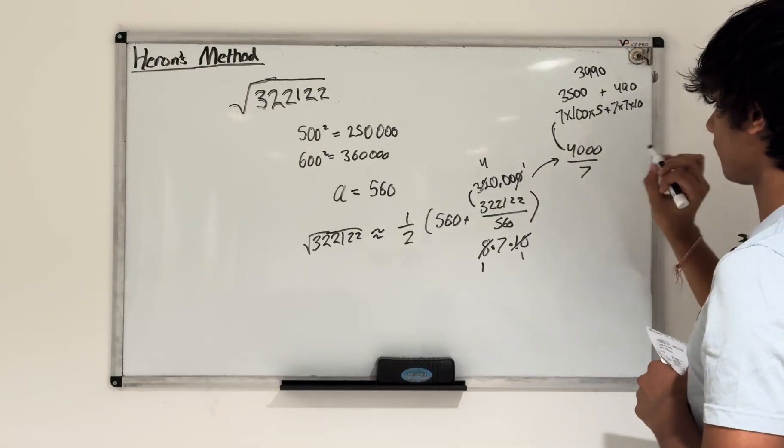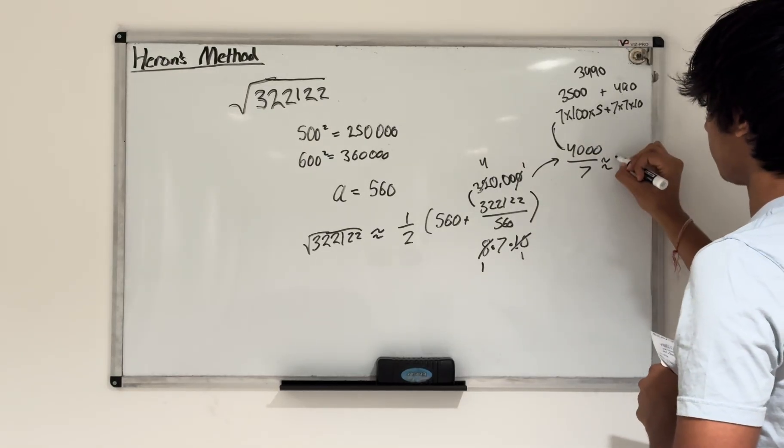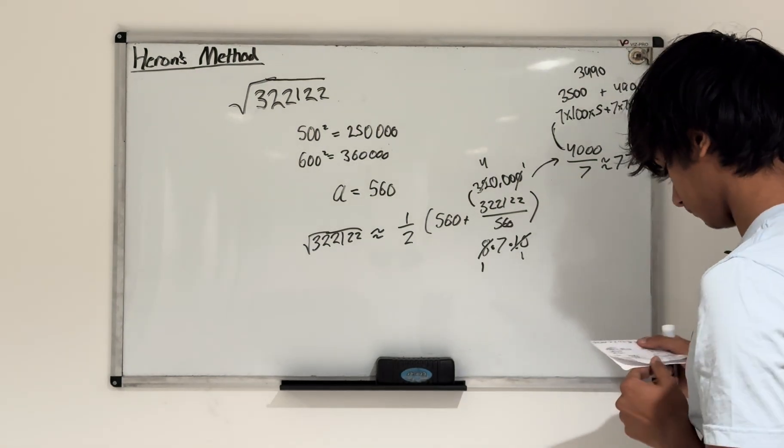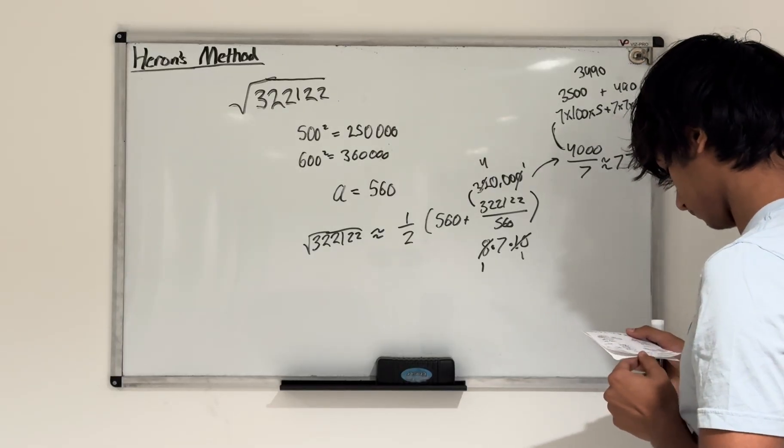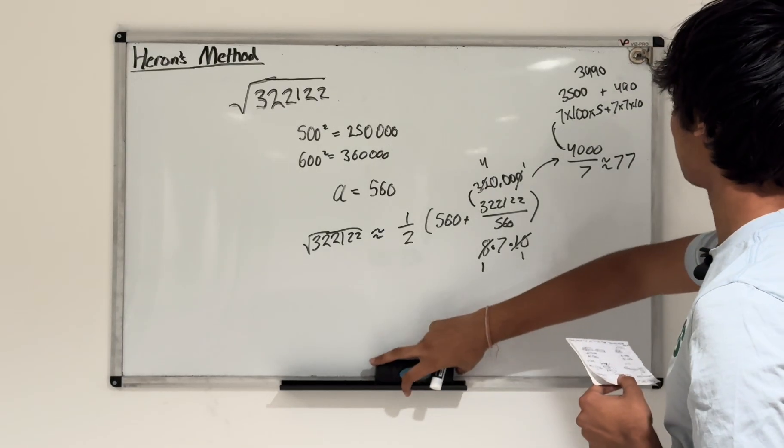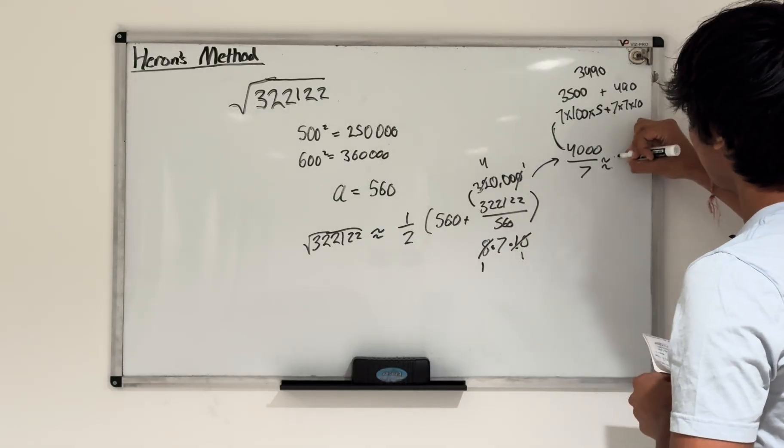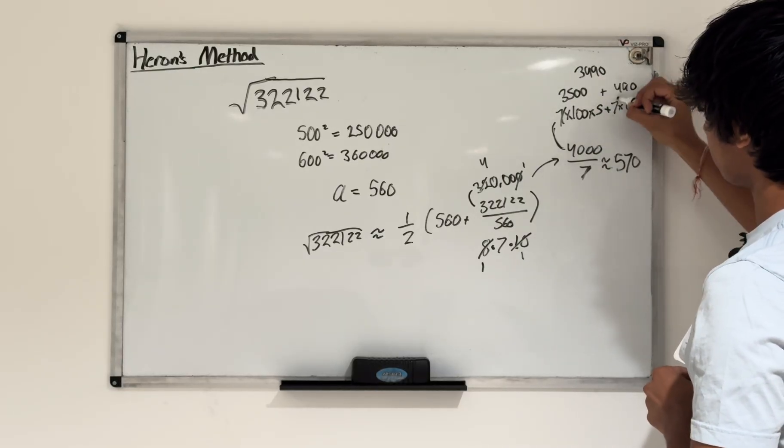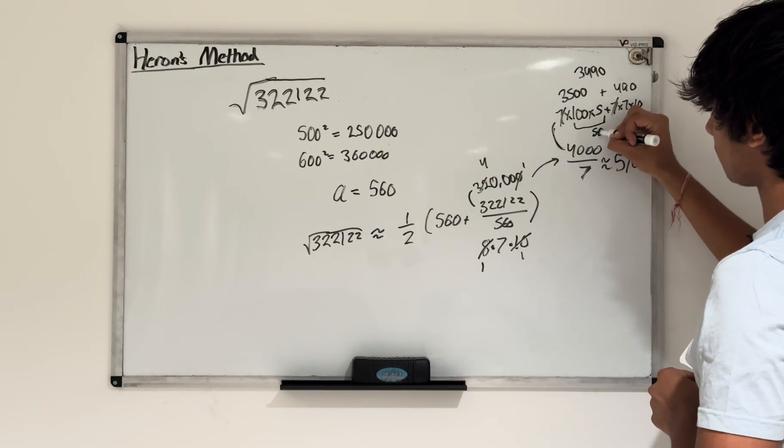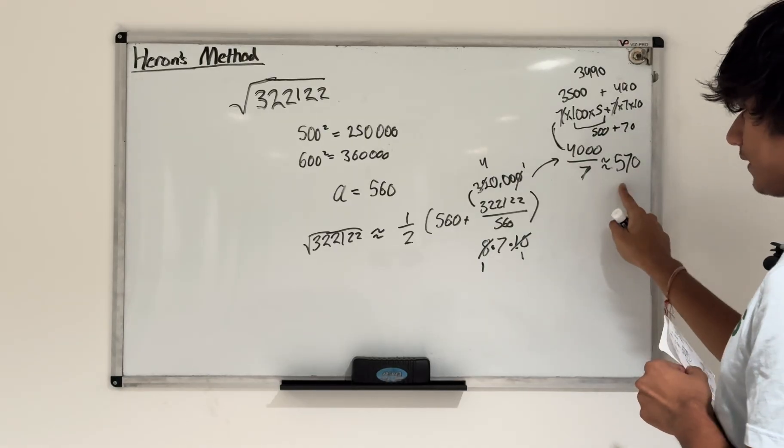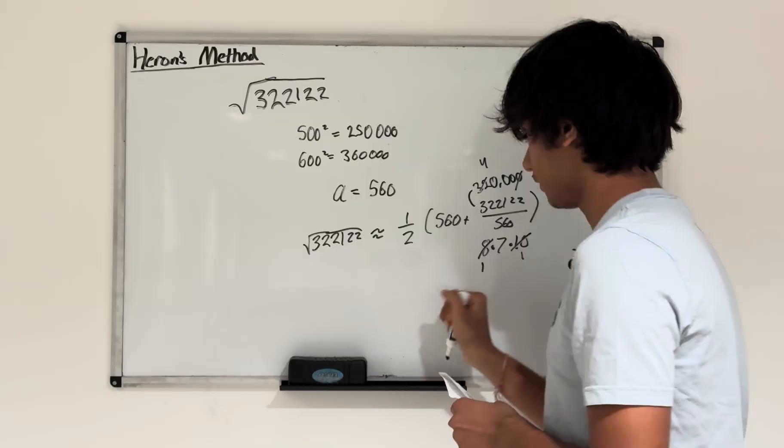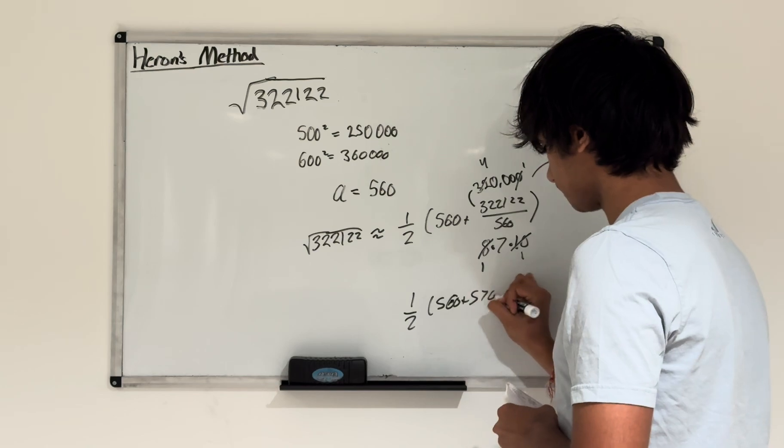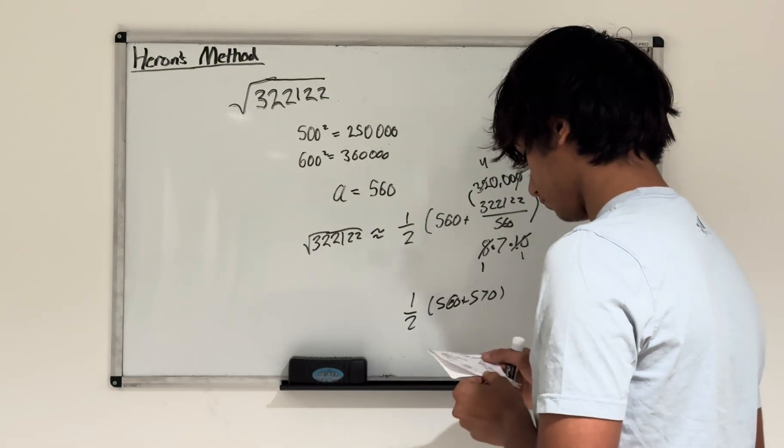Wait, it's equal to 570. I messed up there. So basically, all I did is I just said 7's cancel out here. So yeah, 500 plus 70. So 570 is my estimate for this division. Now what I have to do is I have to do 1 half times 560 plus 570.